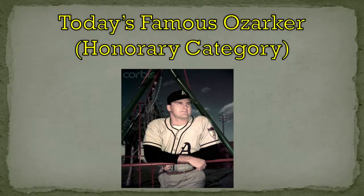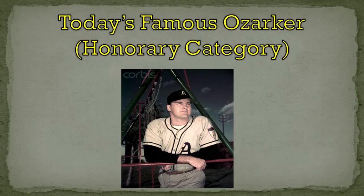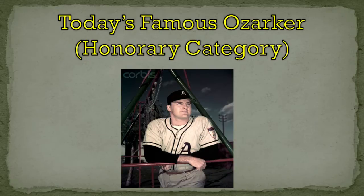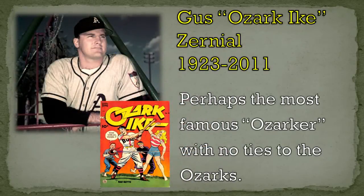If anybody's miserable in the wintertime and you're waiting for baseball to roll around, here's your picture. Anybody know who this famous Ozarker is? You can see their honorary category, which means he's actually not from the Ozarks but has some kind of connection. This is really obscure and going back a few years. That uniform is the Athletics — the A's. That's either the Philadelphia A's or the Kansas City A's, probably the Philadelphia A's before they made their way to Oakland. This is a guy known in his playing days as Ozark Ike.